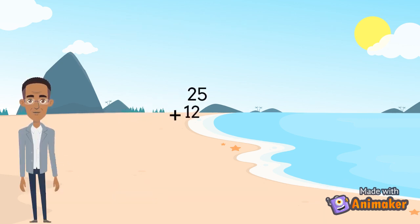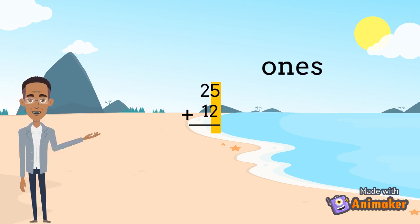When you're adding two double digit numbers, you have to make sure that they're lined up correctly. Make sure that your ones numbers line up and that your tens numbers line up.